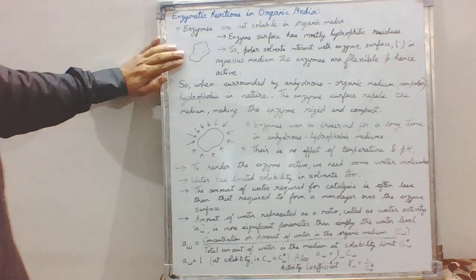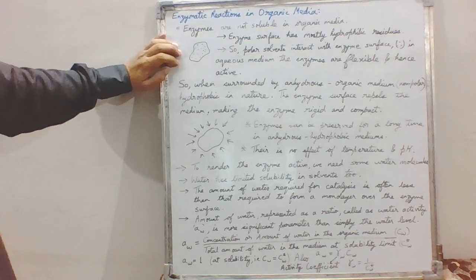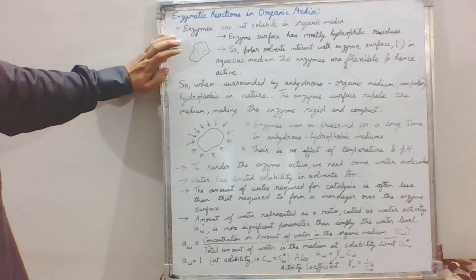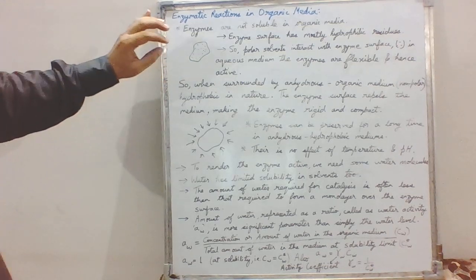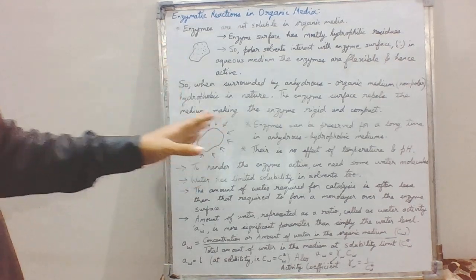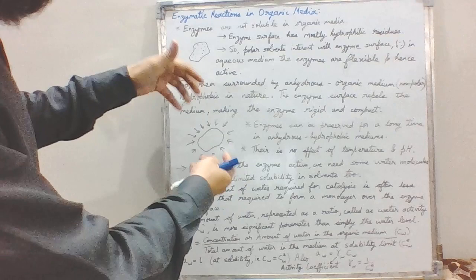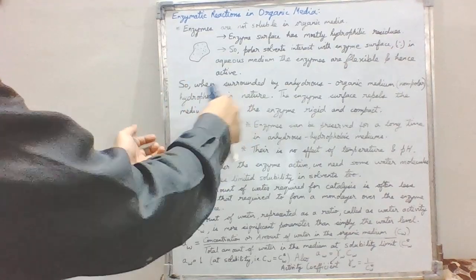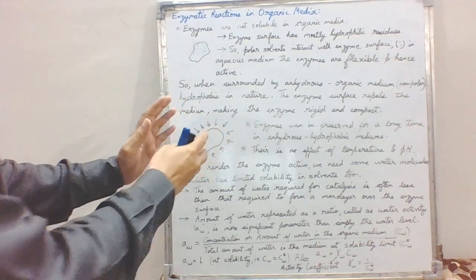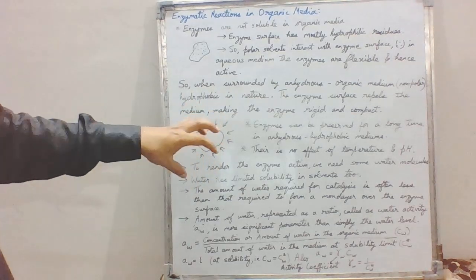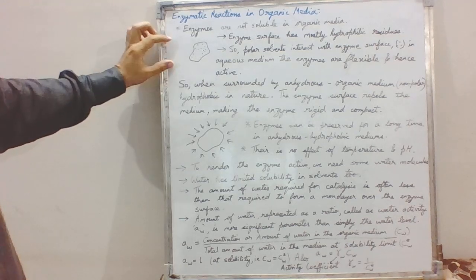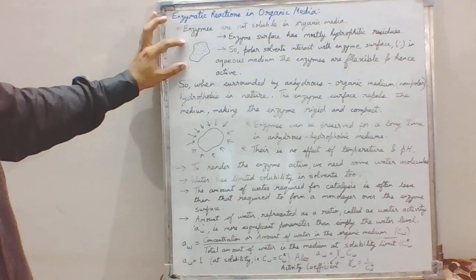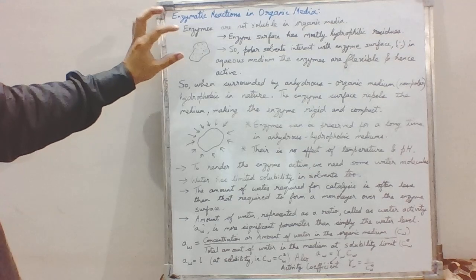When we put a hydrophilic substance in an organic medium — which is hydrophobic and contains no water — the enzymes are repelled. The surrounding organic medium repels the enzyme, and the residues tend to move towards the inner side, compressing or at least making the enzyme rigid. Therefore, proteins and enzymes within organic solvents are rigid structures — they are not flexible.